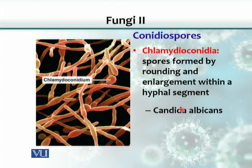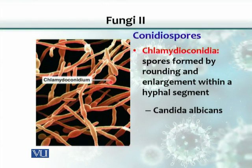Another form of conidia spore — and remember, these spores are not enclosed in a sac — is chlamydoconidia. Chlamydoconidia spores are formed by enlargement and thickening of the mother cell. The cell simply enlarges and thickens into a round body, which we call a chlamydoconidium. Candida albicans is again an example.